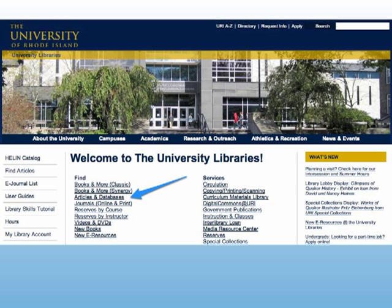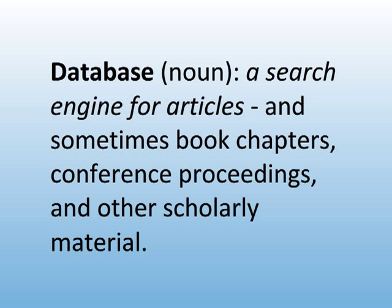You can find journal articles by using a search tool that contains citations to journal articles called a database. Databases are essentially search engines that look for articles and sometimes other scholarly materials. You can type in the topics you're looking for and find articles discussing that topic.